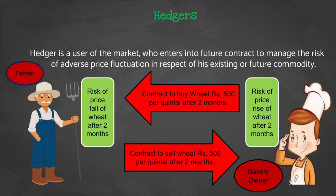Now we will see the participants in the commodity market — hedgers, speculators, and arbitrators. Let's discuss one by one. Hedgers: a hedger is a user of the market who enters into a future contract to manage the risk of adverse price fluctuation in respect of his existing or future commodity. Hedgers can be anyone — like farmers, manufacturers, importers, exporters, etc.